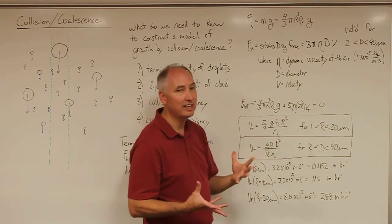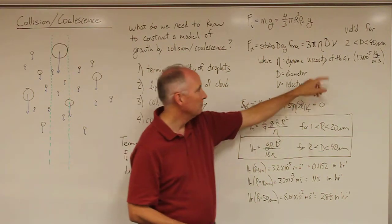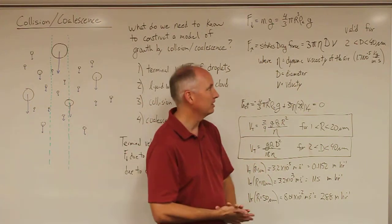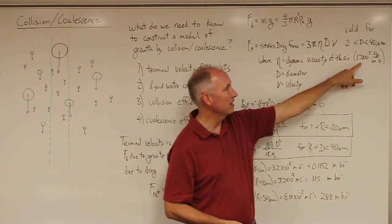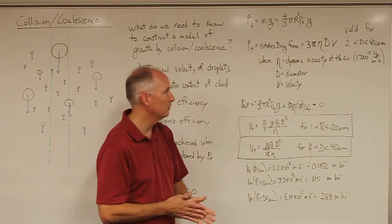η in this case is the dynamic viscosity of the air. The more viscous the air is, the stronger the drag force. The viscosity of air at sea level under most STP conditions is 1.7 × 10⁻⁵, and the units are kilograms per meter per second.